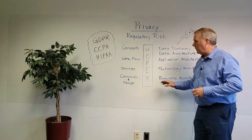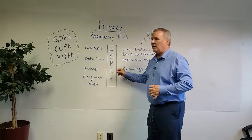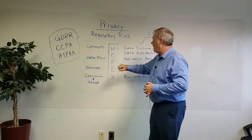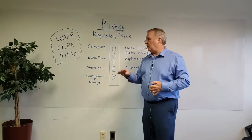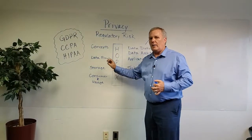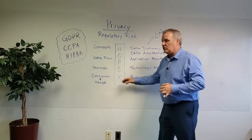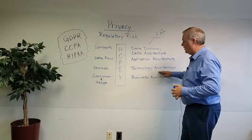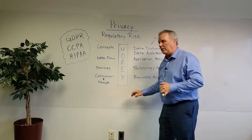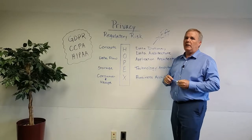An example of this might be a process for customer management, which includes how data is brought into the system. First, we outline what the concepts are — these are stored in your data dictionary. We then identify the structure of the data being moved, which represents your data architecture. We show the flow from application to application that supports this process as part of your application architecture. Then we show the systems supporting this through technology architecture, including encryption levels and that type of thing. We can also see who these people are and how they're using it by introducing business architecture concepts like value streams, capability mapping, and all of these other things.